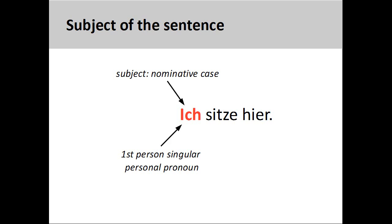In the sentence you see on the screen, 'Ich sitze hier' — I am sitting here — the first-person singular personal pronoun 'ich' performs the action of sitting. Therefore, it is in the nominative case and the subject of the sentence. The adverb 'hier' simply describes the place where the action is being performed.